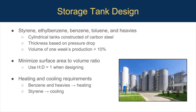After being separated, styrene, ethyl benzene, benzene, toluene, and heavy products are transported to storage tanks. Cylindrical storage tanks are constructed out of carbon steel, with thickness calculated based on pressure drop. The volume of each tank is based on one week's production with an additional 10% safety factor. To minimize the surface area to volume ratio, the height to diameter ratio is designed to be one to one. Some tanks require heating and cooling elements: the benzene tank should be heated due to its relatively high freezing point, the heavies also need to be heated on cold days, and the styrene tank should be cooled to prevent polymerization.